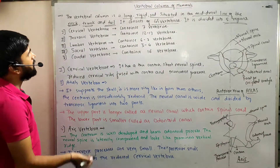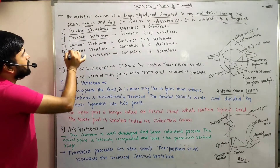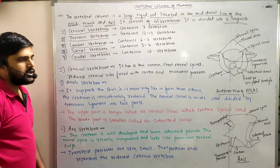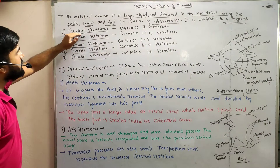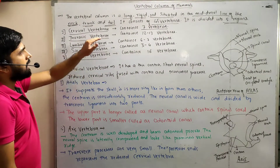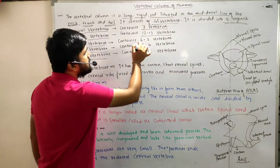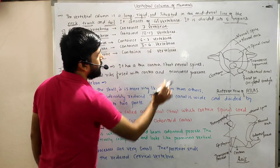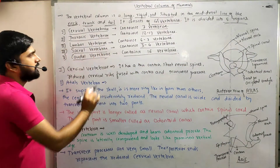Those 5 regions are: first, cervical vertebrae (neck region); second, thoracic vertebrae; third, lumbar vertebrae; fourth, sacral vertebrae; and fifth, caudal vertebrae. The cervical vertebrae consist of 7, thoracic of 12–13, lumbar of 6–7, sacral of 3–4, and caudal of 16 vertebrae.